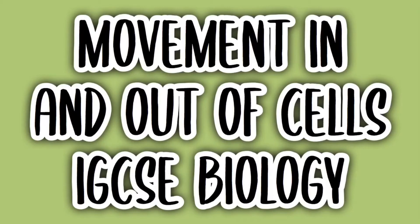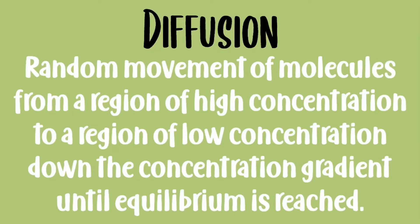In this video I'll be talking about the movement in and out of cells. So what is diffusion? Diffusion is the random movement of molecules from a region of high concentration to a region of low concentration, down the concentration gradient until equilibrium is reached.